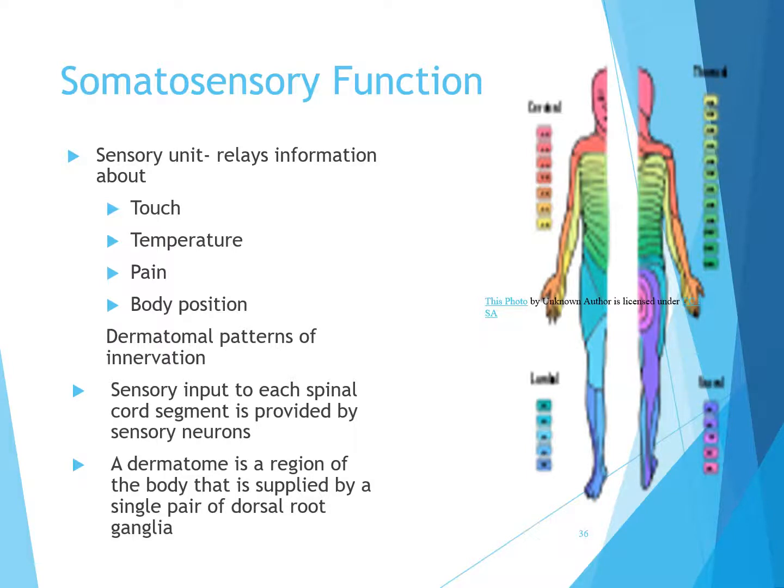Regarding somatosensory function: the sensory unit relays information about touch, temperature, pain, and body position. Dermatomal patterns of innervation refer to sensory input into each spinal cord segment provided by sensory neurons. A dermatome is a region of the body supplied by a single pair of dorsal root ganglion, as shown in the diagram.